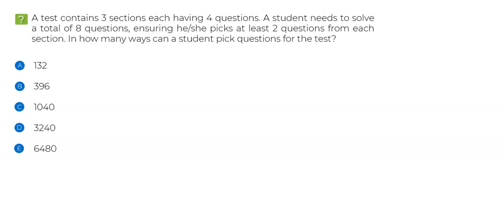Here's an interesting question. Those of you who haven't tried this question, I'd strongly suggest pausing the video, trying it once, and then resuming to see the solution. As far as this question is concerned, I'm going to take a guess: about 60 to 70 percent of you might have marked the answer as option D. If you think that's correct, let me tell you — unfortunately, this is not the correct answer. The purpose of this question is to tell you about a very common mistake known as double counting.